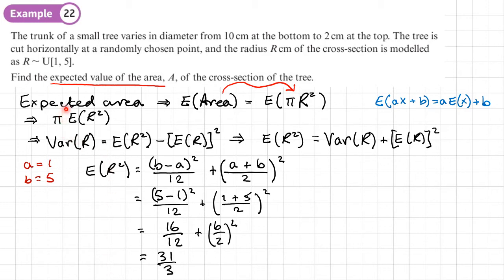But we need to remember that actually we want to find the expected area. We found E of R squared. So we need to make sure that we times that by π because we stuck the π at the front. So our final answer would be 31π over 3. And that's the expected area.